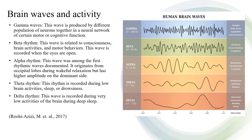Gamma waves are produced by different populations of neurons together in a neural network for certain motor or cognitive functions. Beta rhythm is related to consciousness, brain activities, and motor behaviors, and is recorded when the eyes are open. Alpha rhythm was among the first rhythmic waves documented; it originates from the occipital lobes during wakeful relaxation but has higher amplitude on the dominant side. Theta rhythm is recorded during low brain activity, sleep, or drowsiness. Delta rhythm is recorded during very low activity of the brain during deep sleep.